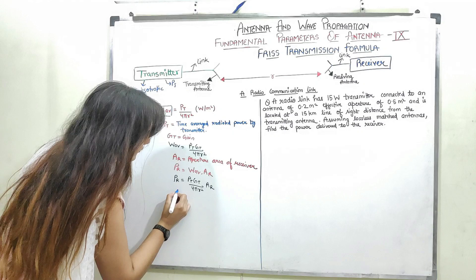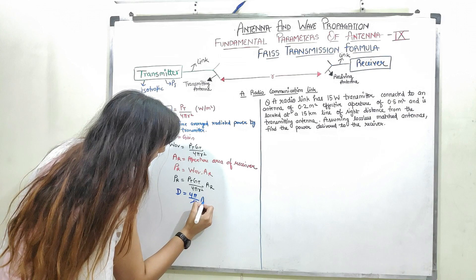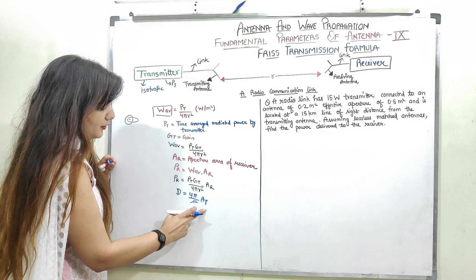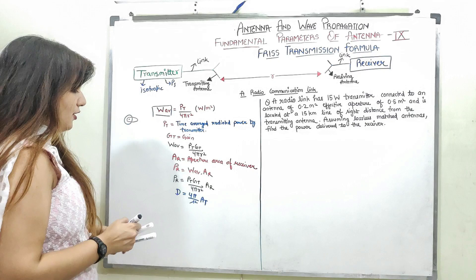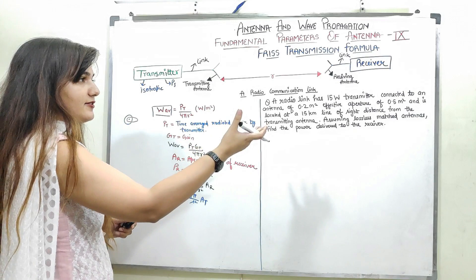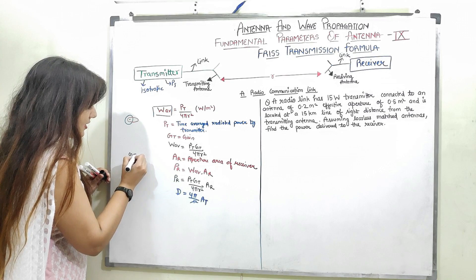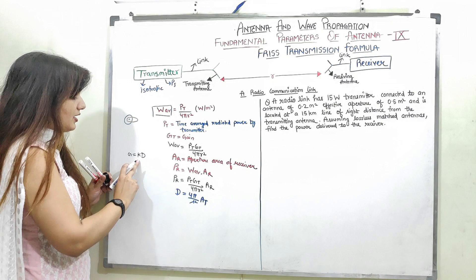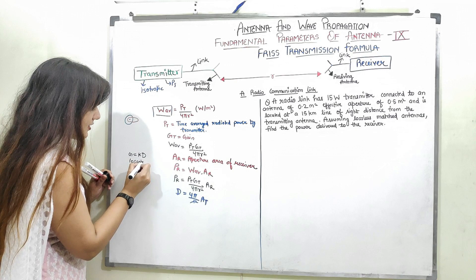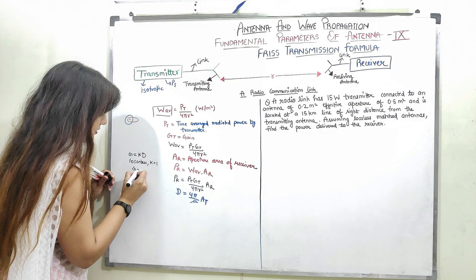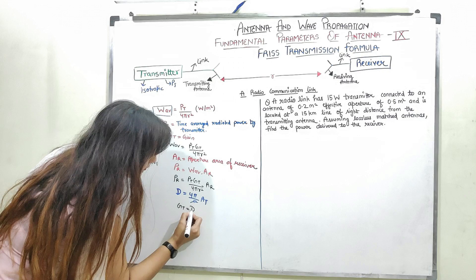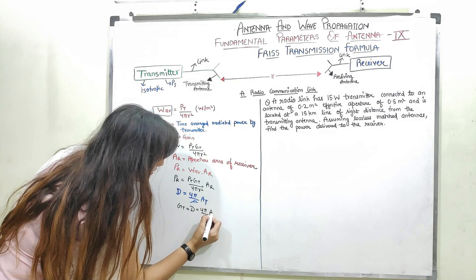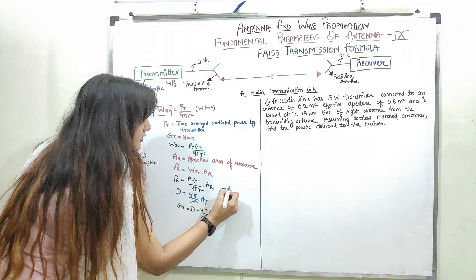I know that directivity is given by D = (4π / λ²) × AT, where AT is the transmitting side aperture area. Now, if I am considering lossless conditions, I know gain G = K × D where K represents radiation efficiency. For lossless conditions, K = 1 and G = D. So Gt = D = (4π / λ²) × AT. Replacing this value of Gt in equation number 1: